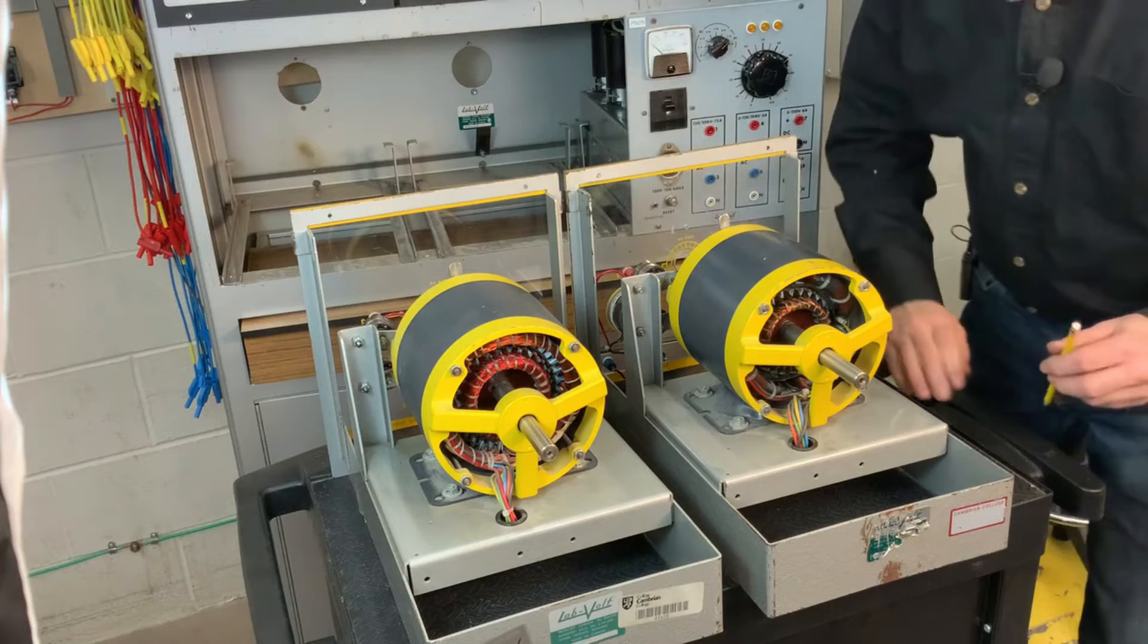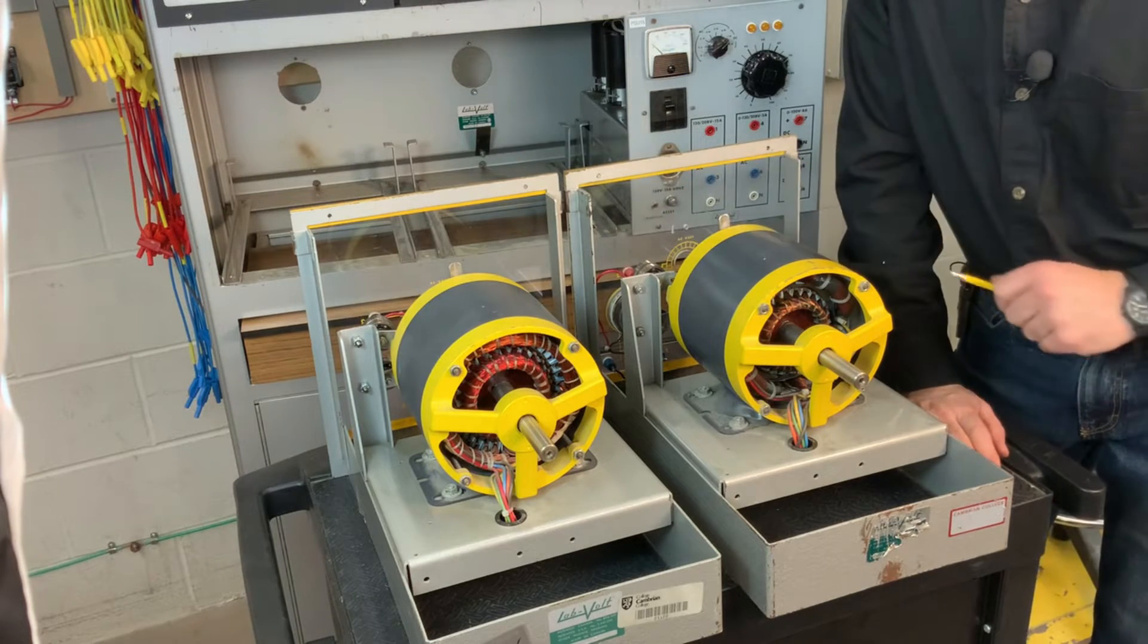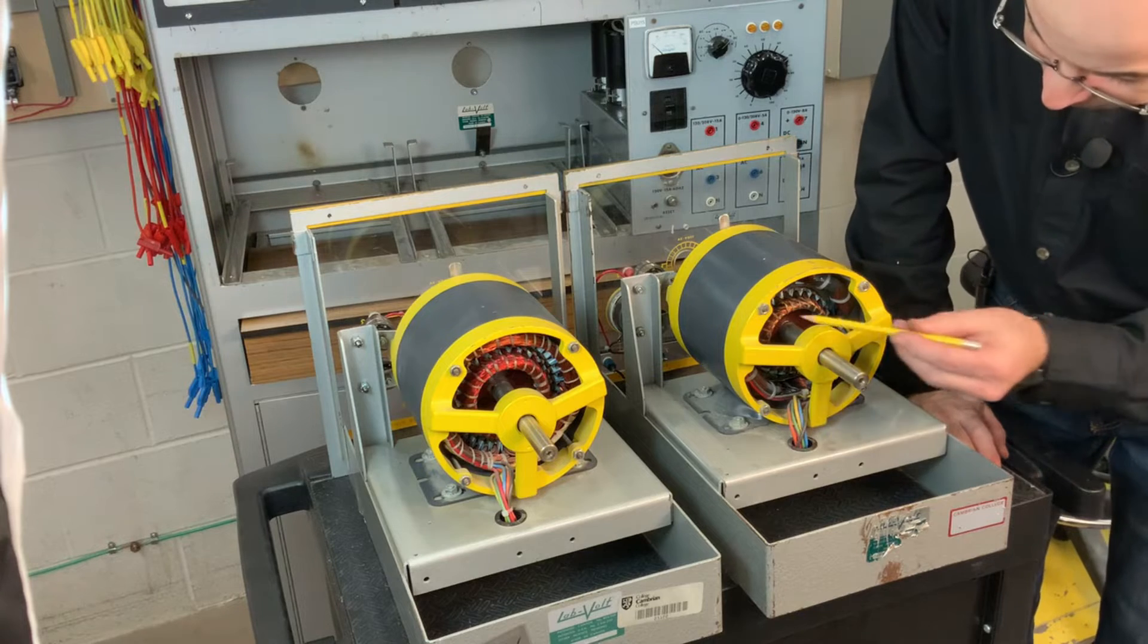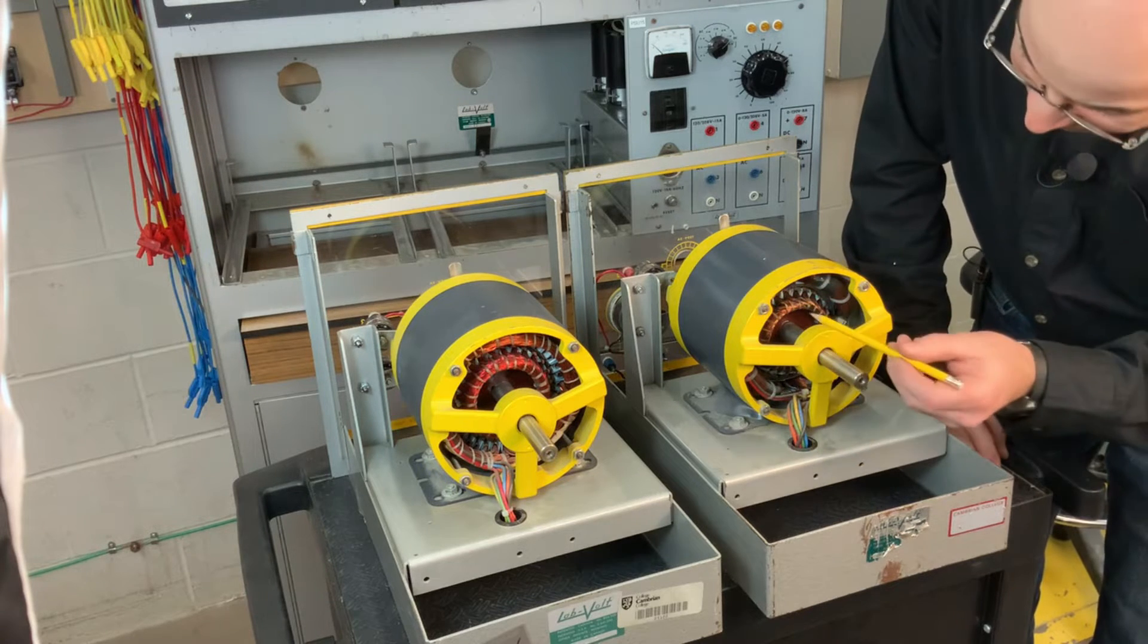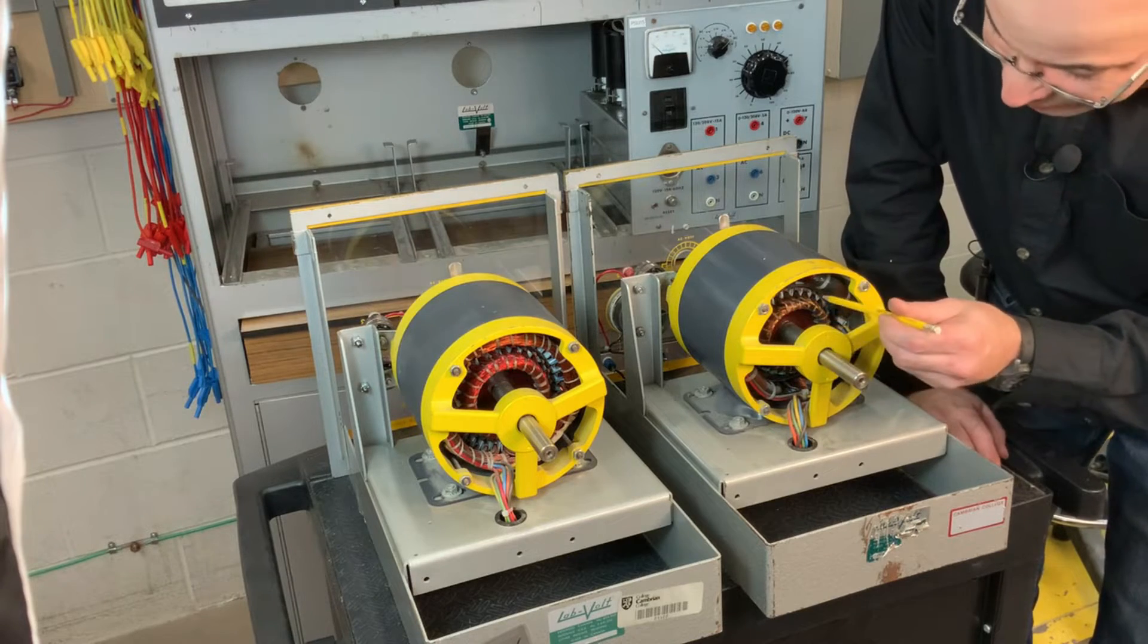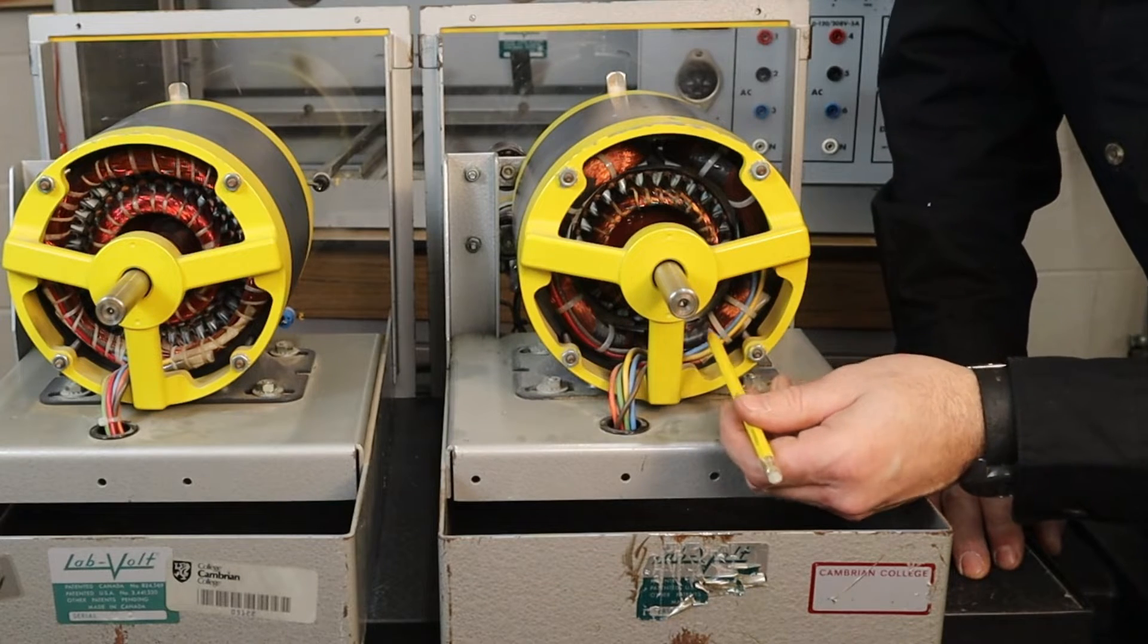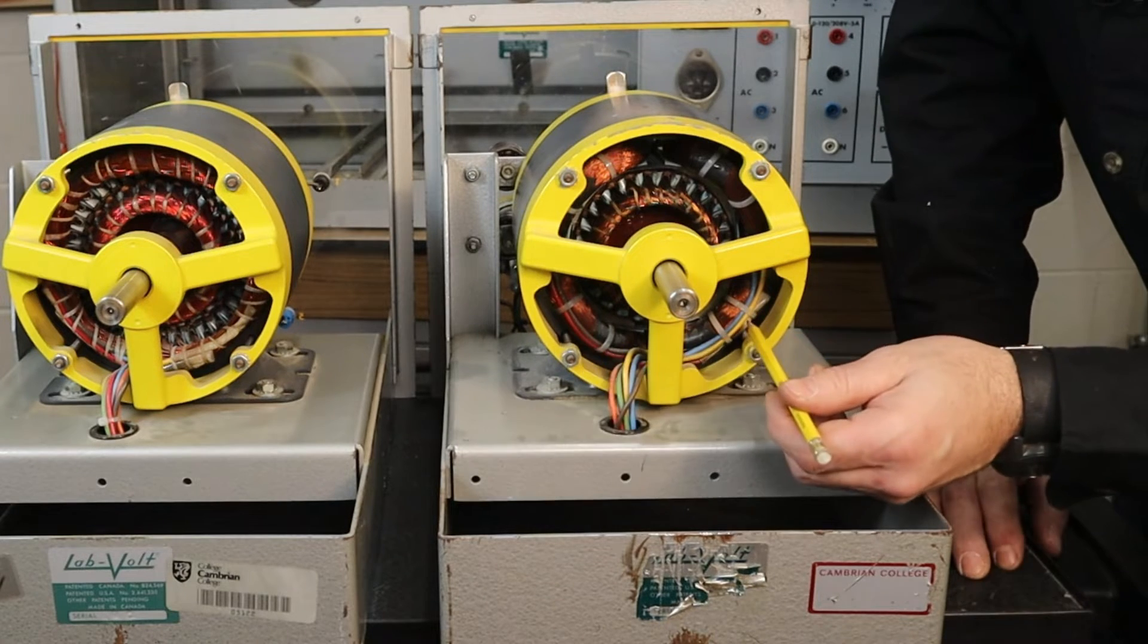Now the major points of distinction between these two machines isn't in its armature but rather in its stator. What we can see in the DC machine is it's apparent that it has four distinct poles, and they have the series and shunt field windings wrapped around each of the poles.